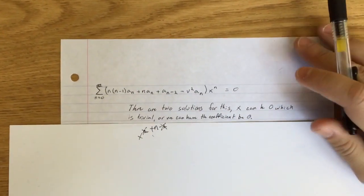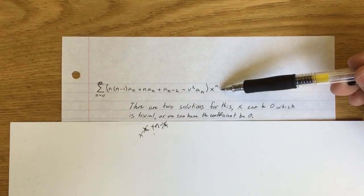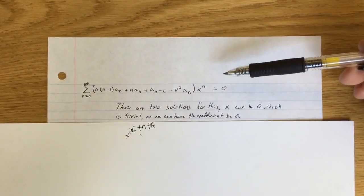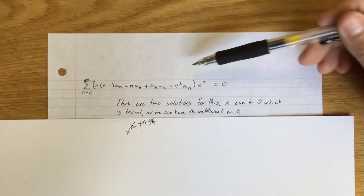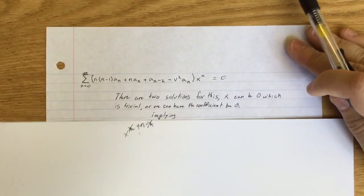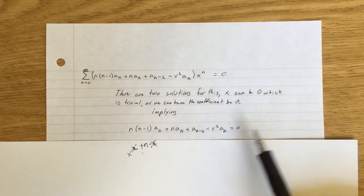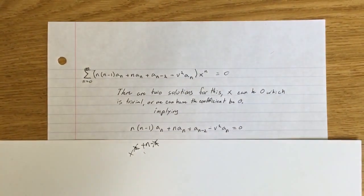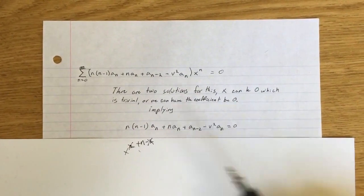So we could have two solutions to this, where you either have x to the n equals 0, which is trivial because x is just 0, or the coefficient is 0. So what we want to do is solve for the coefficient to be 0, but we want to solve specifically for a_n.